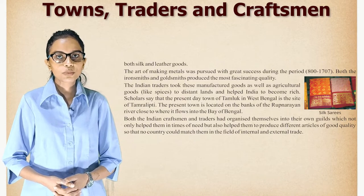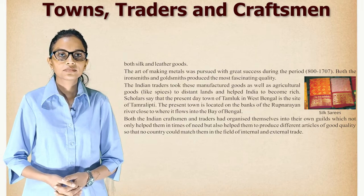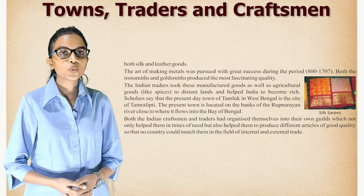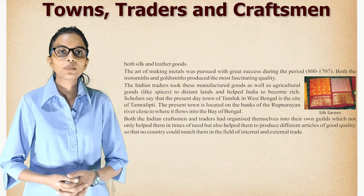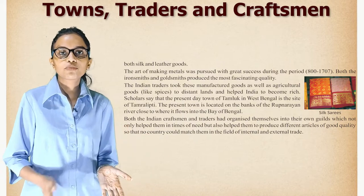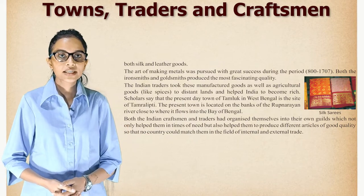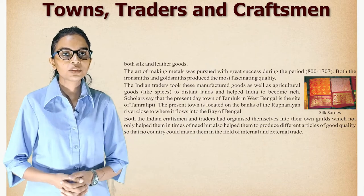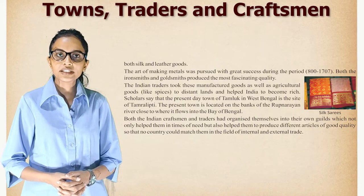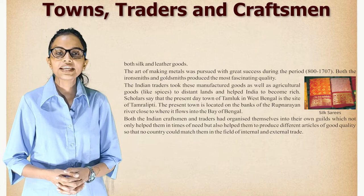Indian traders took manufactured goods as well as agricultural goods like spices to distant lands and helped India become rich. Scholars say that the present-day town of Tamluk in West Bengal is the site of ancient Tamralipti, located on the banks of the Rupnarayan River close to where it flows into the Bay of Bengal. Both Indian craftsmen and traders organized themselves into their own guilds, which not only helped them in times of need but also helped them produce articles of good quality, making India unmatched in internal and external trade.